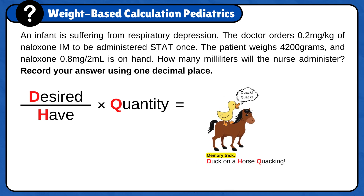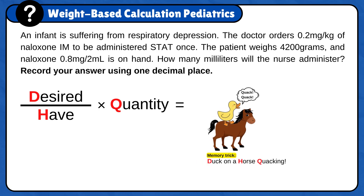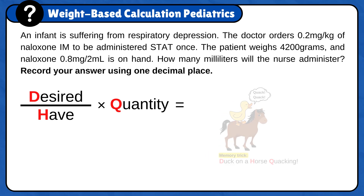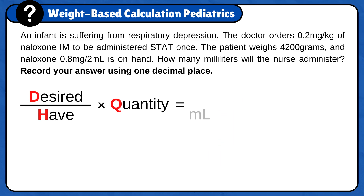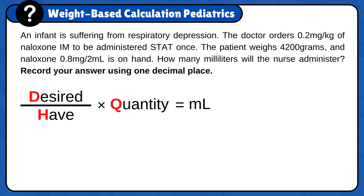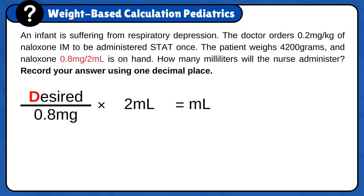Just imagine a duck on a horse quacking. The next step is to add the unit answer, milliliters, because the question is asking how many milliliters will the nurse administer? Now that the formula is ready, we need to plug in the numbers. Start with half and quantity, because they are usually given to you and they come together. So for this problem it is 0.8 mg per 2 milliliters.